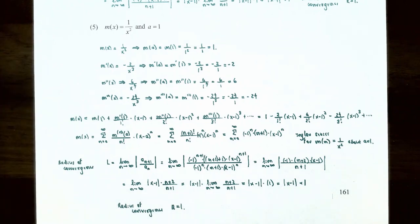This finishes our video on Taylor and Maclaurin series. We talked about the procedure for finding the Taylor polynomial of a given order for a function. If you have any questions about the examples or the homework for this section, please let me know. I'll see you in the next video when we talk about Taylor's theorem with a remainder term.